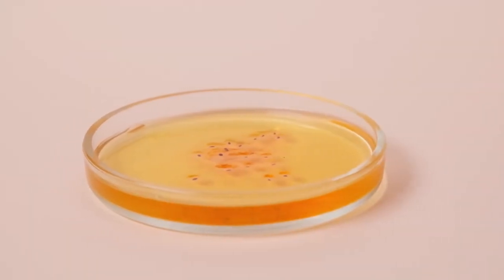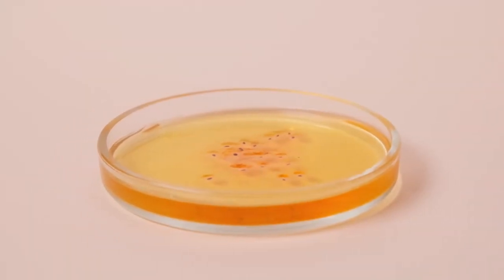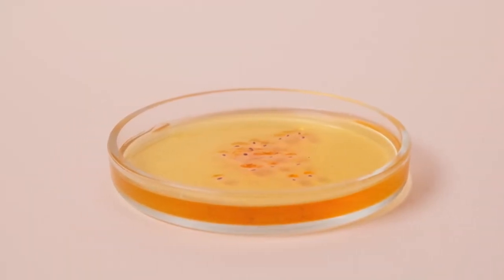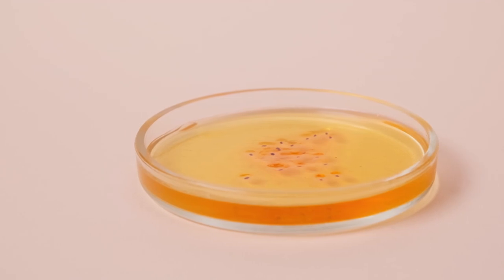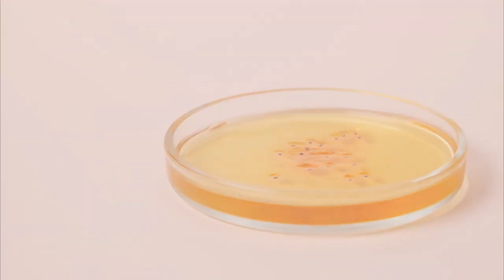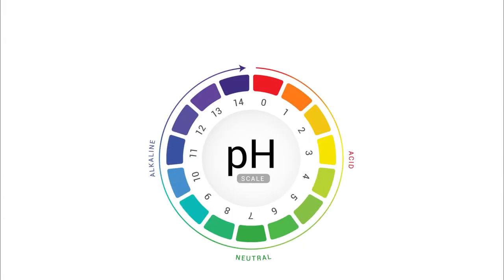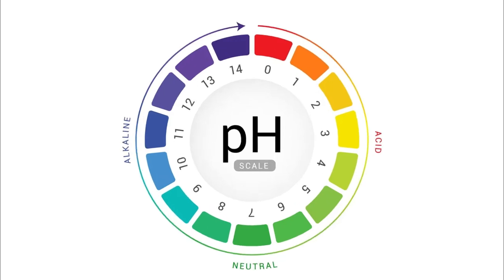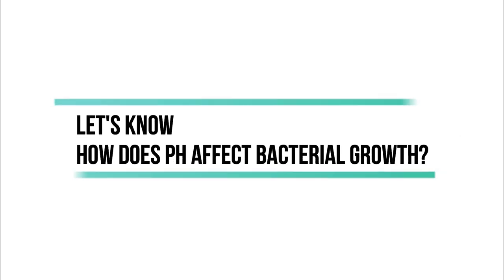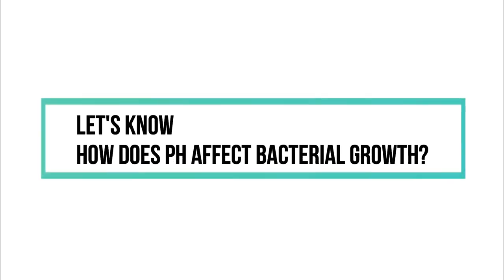In this video, we're going to talk about the classification of bacteria on the basis of optimum pH of growth. The pH is another environmental condition that dictates microbial growth. Let's know how does pH affect bacterial growth.